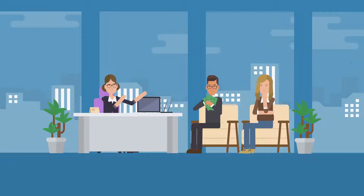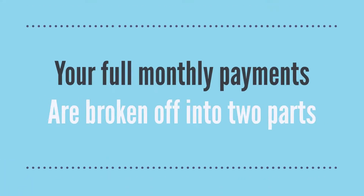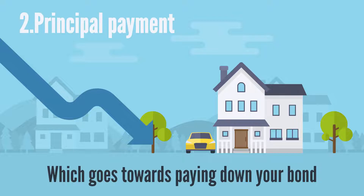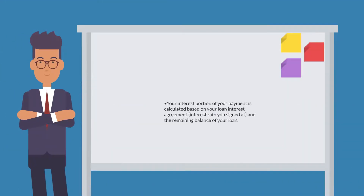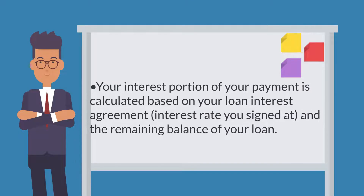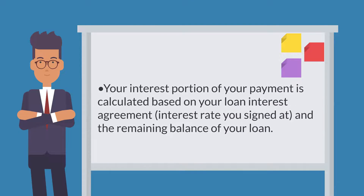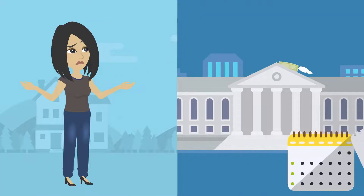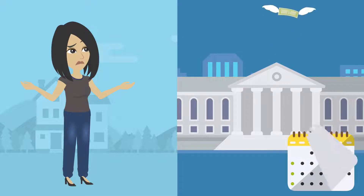You pay off your loan over its term and your full monthly payments are broken into two parts: interest payments, which go to the lender — your bank — and the principal payment, which goes towards paying down your bond. Your interest portion is calculated based on your loan interest agreement and the remaining balance of your loan. The principal payment amount is what remains after the interest portion has been deducted from your monthly payment.